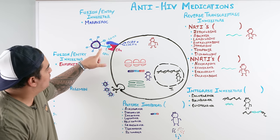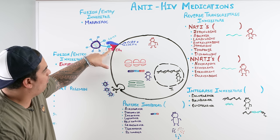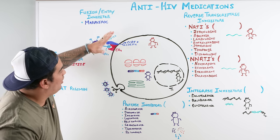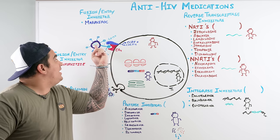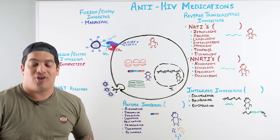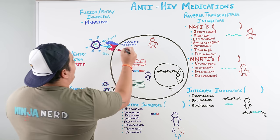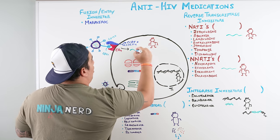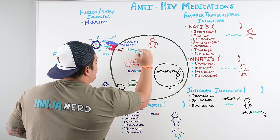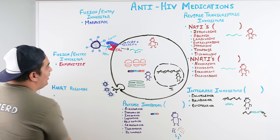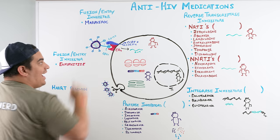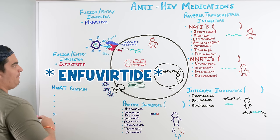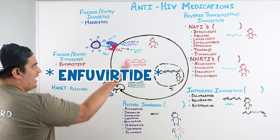Once the virus uses gp41 to bind CD4 and gp120 to bind CCR5 or CXCR4, it fuses with the host cell and releases its RNA into the host cell. We can use drugs to prevent this fusion and entry of viral RNA. One of these is enfuvirtide, a fusion/entry inhibitor that blocks the gp41–CD4 interaction.